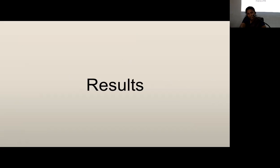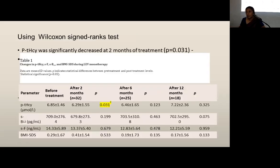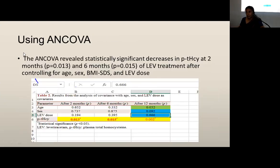Moving to results: data analyzed using the Wilcoxon signed-rank test showed that plasma homocysteine was significantly decreased at two months of treatment, with a p-value of 0.031. Statistical significance is defined as p-value less than 0.05. Using the ANCOVA test, there was a statistically significant decrease in plasma homocysteine at two months (p=0.013) and six months (p=0.015) of levetiracetam treatment, after controlling for age, sex, BMI, and dose.